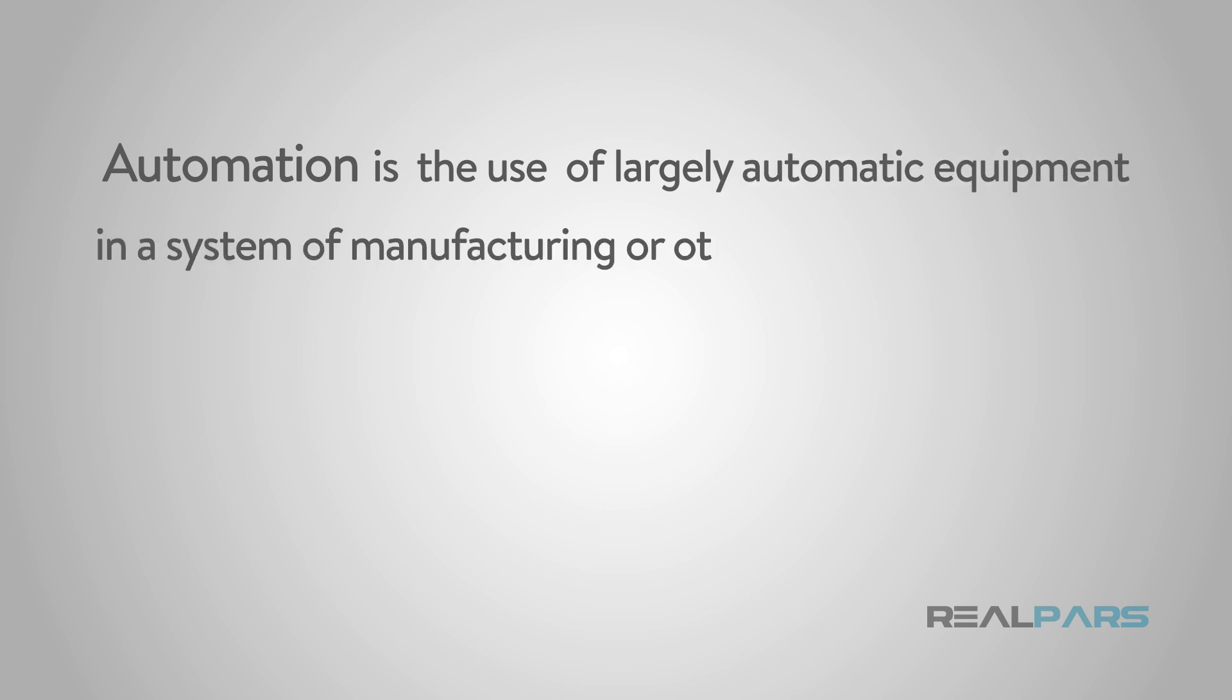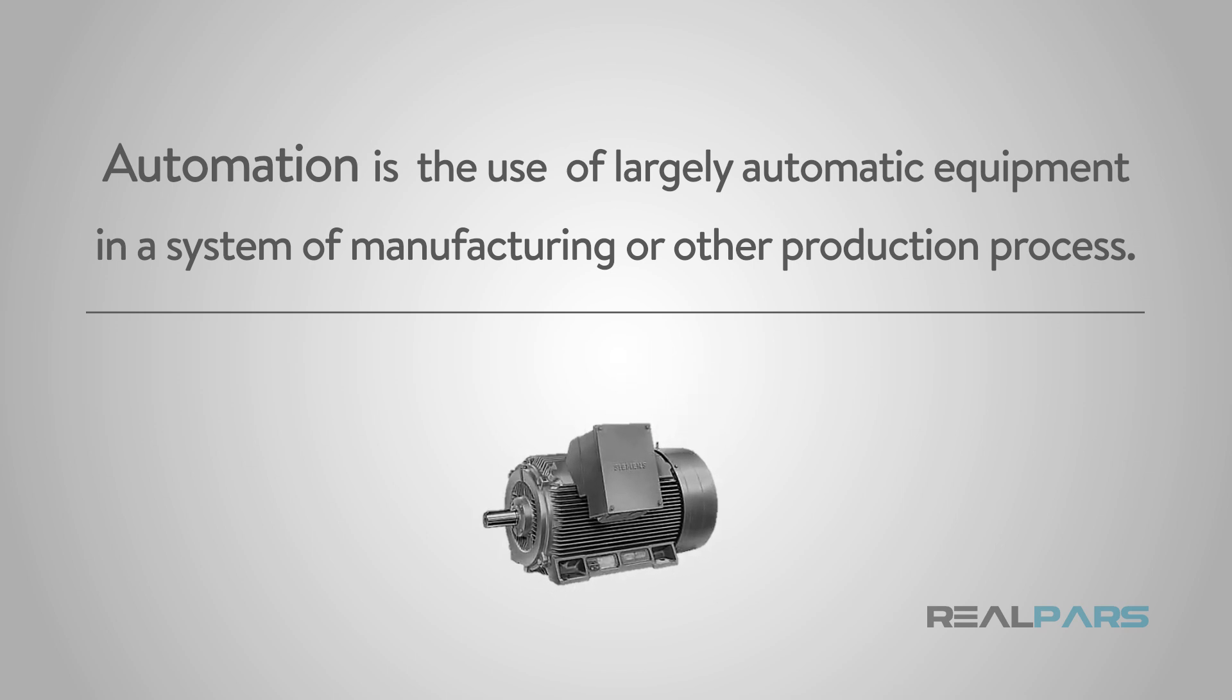What exactly does automation mean? Automation is the use of largely automatic equipment in a system of manufacturing or other production process. This typically includes the use of PLCs, sensors, robots, and motors among many other things depending on the automated process.